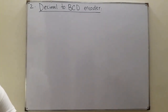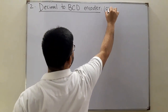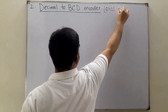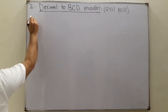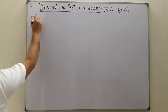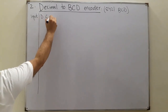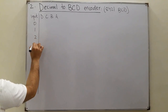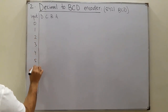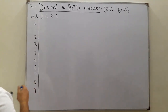We're talking about the 8-4-2-1 BCD. Here we have the inputs and the four-bit output is represented by D, C, B, and A. We have zero through nine - these ten decimal numbers as inputs.